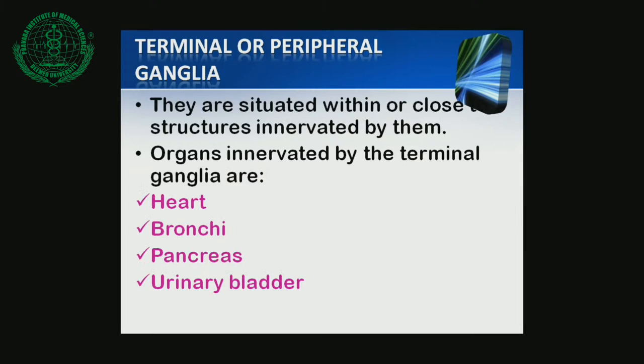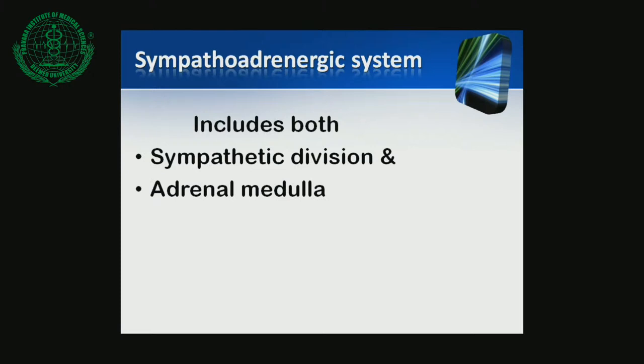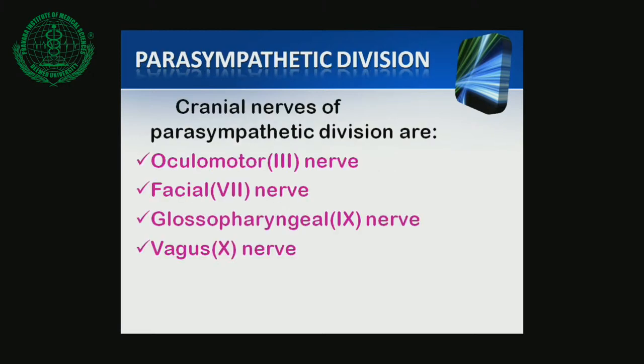The Parasympathetic Division is otherwise called the craniosacral outflow, because the fibers of this division arise from the brain and sacral segments of the spinal cord. The cranial portion of the parasympathetic division — the brain stem — innervates the blood vessels of the head and neck and many thoraco-abdominal visceral organs.